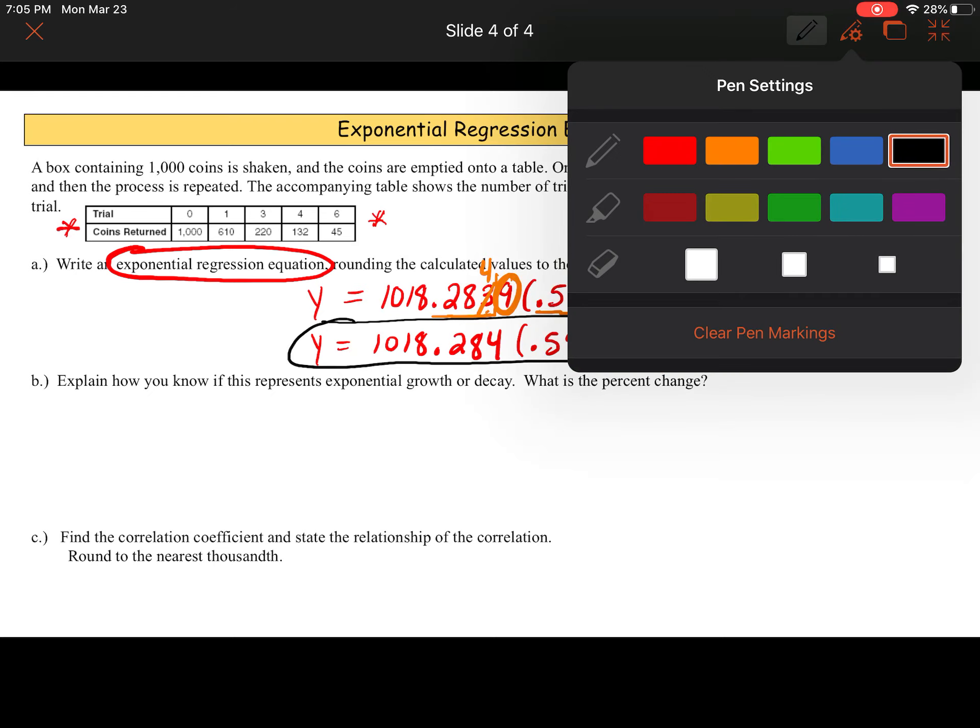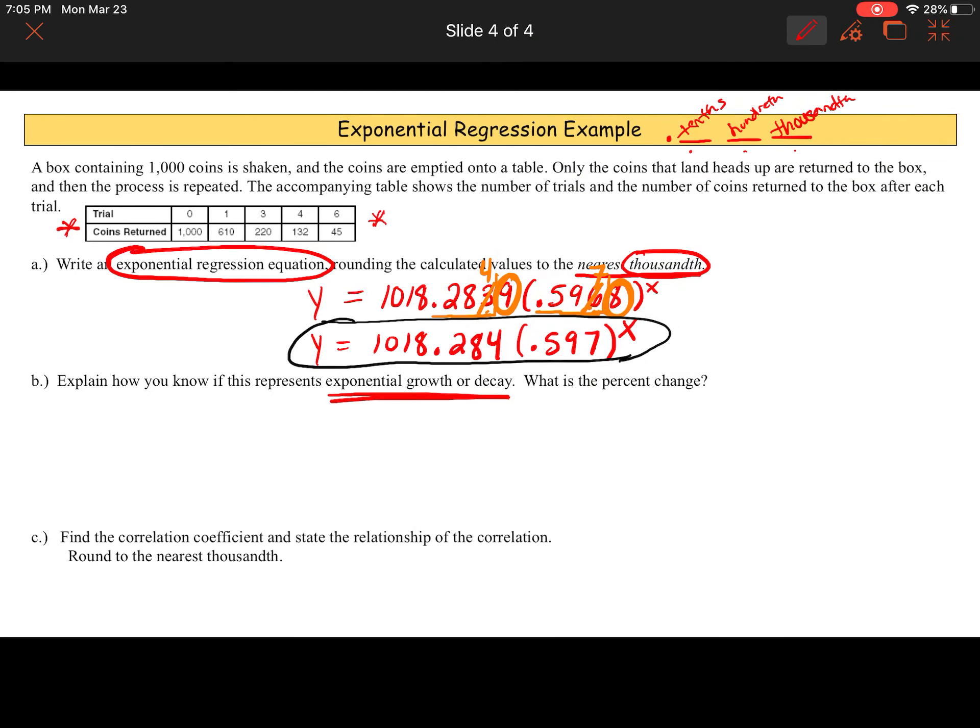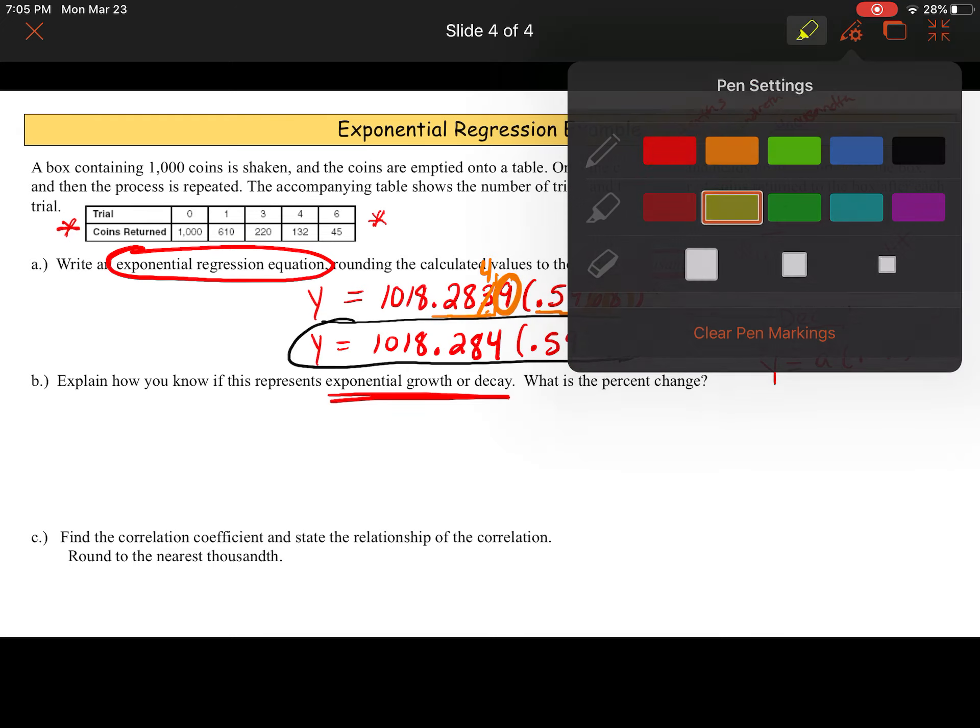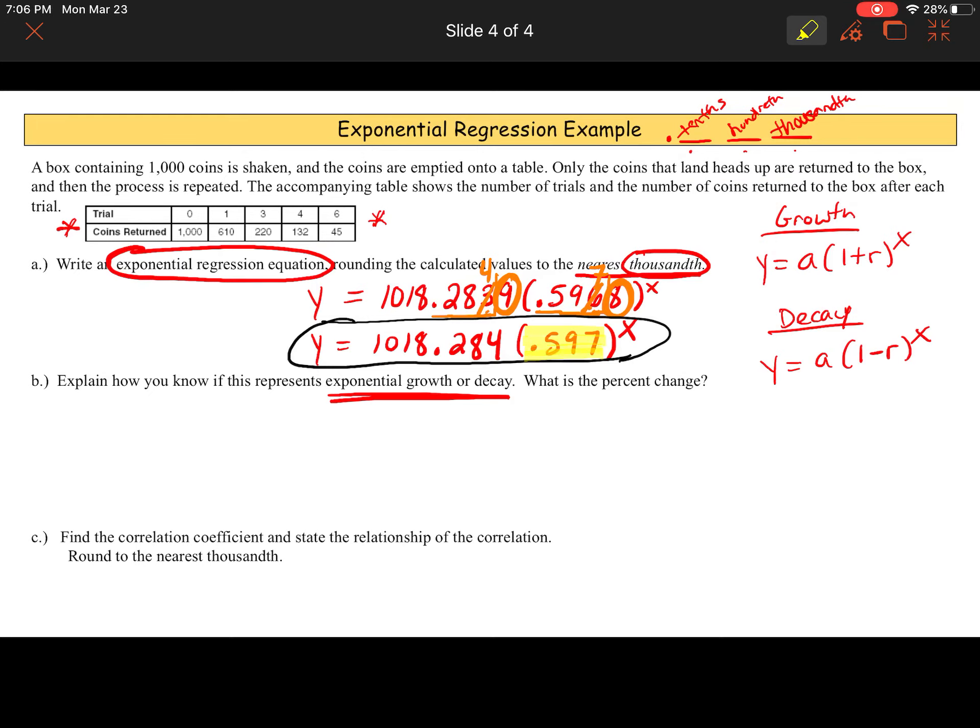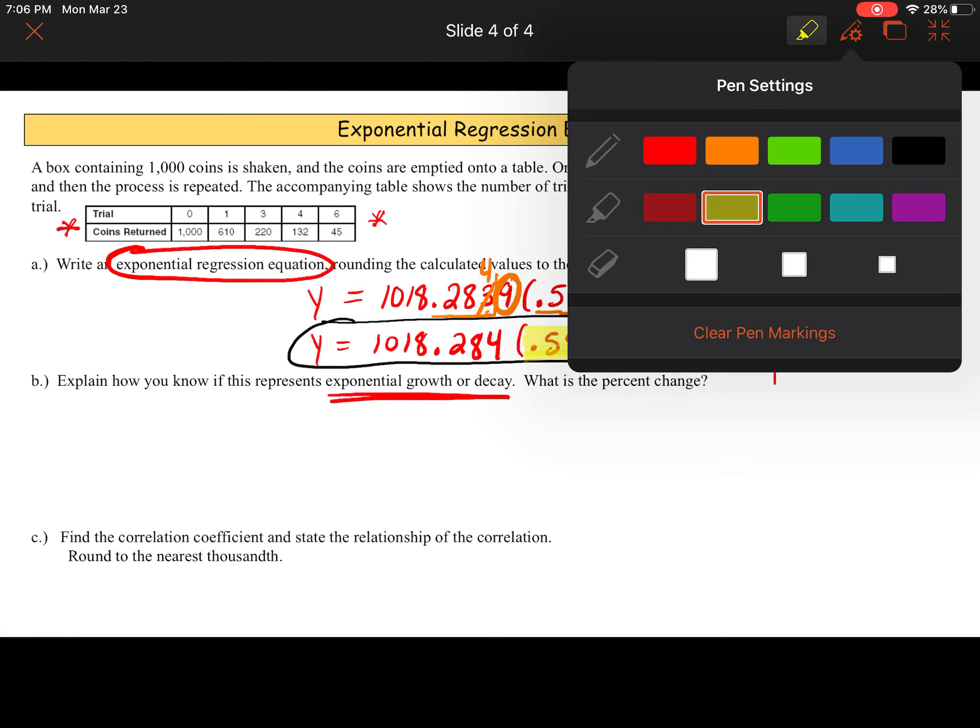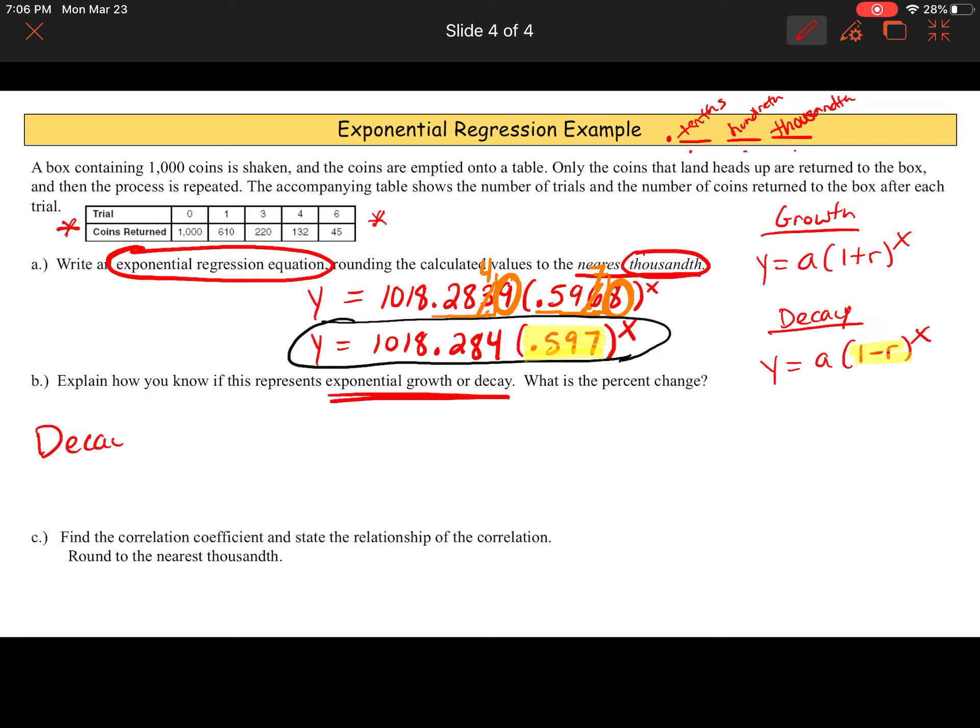Part B, explain how you know if this represents exponential growth or exponential decay. Now, we've done this before. We've talked about exponential growth or decay. Remember, when we look at growth, growth was Y equals A times one plus R to the X, where decay was Y equals A times one minus R to the X. The only difference is the plus and the minus. So, I look inside my parentheses from my equation, and I notice that number is less than 1, 0.597. So, less than 1 would be decay. If it were greater than 1, it would be growth. So, we know that this is decay because 0.597 is less than 1.